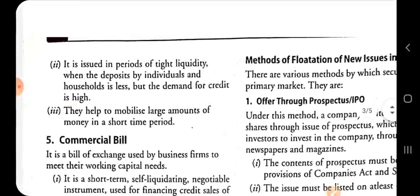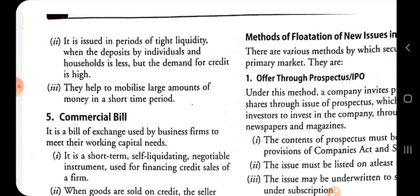In periods of tight liquidity, when the deposit by individual households is less but the demand for credit is high, certificates of deposit help to mobilize large amounts of money in the short term period. When money supply in the market becomes quite low but the demand for money remains high, the credit rate rises.